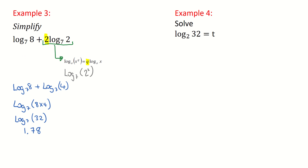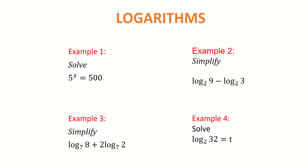The final example asks us to solve for t, where log of 32 to the base 2 equals t. Coming back to the rule from page 21: a to the power of x equals y, so here 2 to the power of t equals 32. The question is really asking: 2 to the power of what equals 32? Typing log of 32 to the base 2 into the calculator gives 5. So 2 to the power of 5 is equal to 32. That's what logarithms are getting you to find — that missing power. So that's a quick introduction to logarithms and four introductory examples.